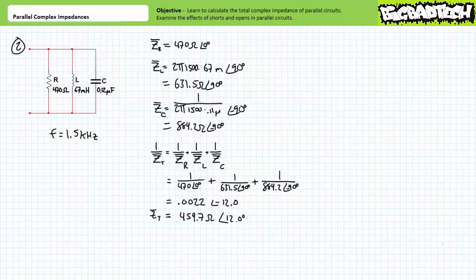For our second example problem, we've been given a parallel relationship of a 470 ohm resistor, a 67 millihenry inductor, and a 0.12 microfarad capacitor at an excitation frequency of 1.5 kilohertz or 1500 hertz. The resistor is an impedance of 470 ohms at an angle of zero degrees. The inductor is an impedance of 631.5 ohms at an angle of positive 90 degrees, and the capacitor is an impedance of 884.2 ohms at an angle of negative 90 degrees. Calculating the total impedance using the more involved method for two or more impedances in parallel, we arrive at a total impedance value of 459.7 ohms at an angle of positive 12 degrees.